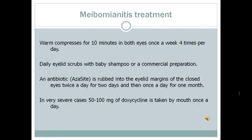Meibomianitis is treated with warm compresses for 10 minutes on both eyes, once a week up to four times per day. Daily eyelid scrubs with baby shampoo or a commercial preparation. An antibiotic, AzaSite, is rubbed into the eyelid margins with the eyes closed twice a day for two days, and then once a day for one month. In very severe cases, doxycycline, 50 to 100 milligrams, is taken by mouth once a day.